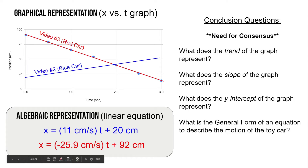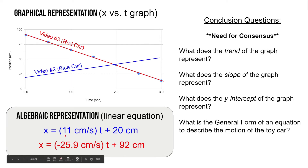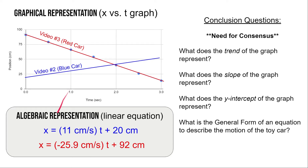These slopes are actually telling us two things. The number is telling us how fast the car is going — its relative speed. If you're going faster you'll cover more centimeters for each second of motion; if you're going slower you'll cover less centimeters per second. So number one, the slope tells us the speed. What does the positive or negative sign tell us? The red car has a negative slope — it starts at a high position and goes back towards zero, moving to the left in the video. The blue car has a positive slope — its position is increasing over time, moving to the right. So the slope tells us both the direction of travel and how fast it's going.